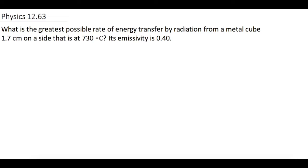What is the greatest possible rate of energy transfer by radiation from a metal cube that is 1.7 centimeters on a side and is at 730 degrees Celsius? Its emissivity is 0.4.